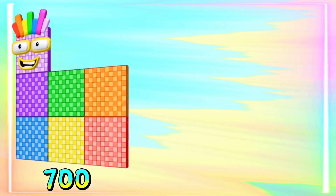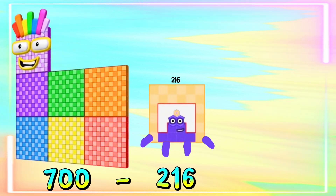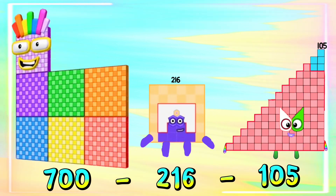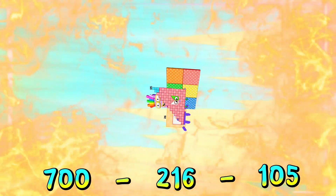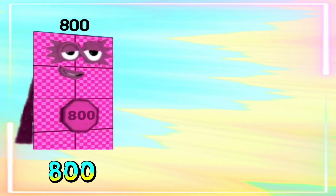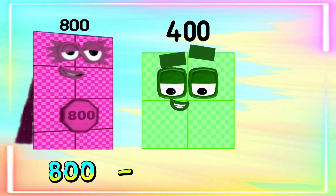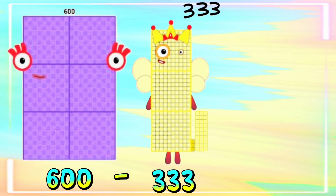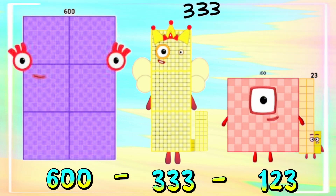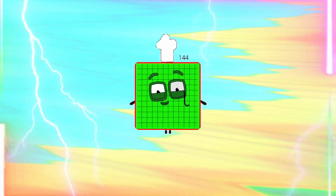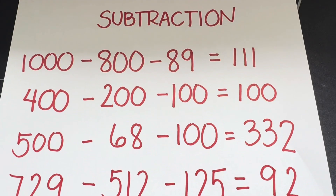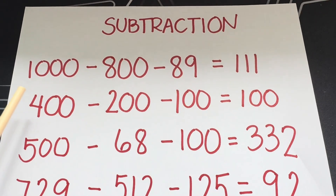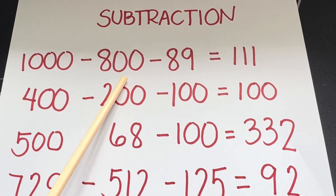92. 700 minus 216 minus 105 is equals to 379. 800 minus 400 minus 200 is equals to 200. 600 minus 333 minus 123 is equals to 144. And now let's summarize.